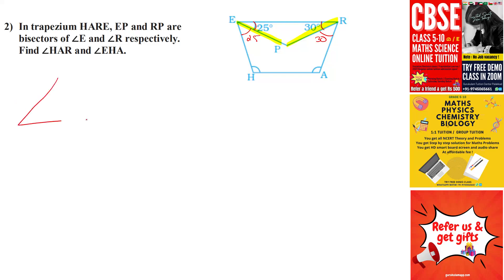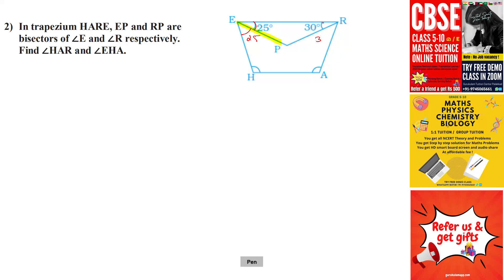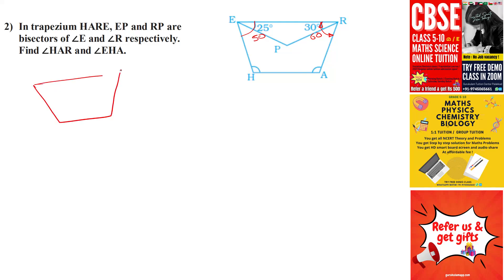The bisector is a line which converts one angle into two equal angles. So the entire angle R is 30 plus 30, which is 60°, and the entire angle E is going to be 50°. We can redraw the same trapezium ERHA with angle E as 50° and angle R as 60°.